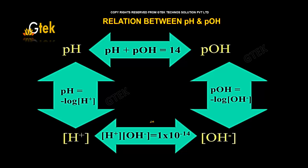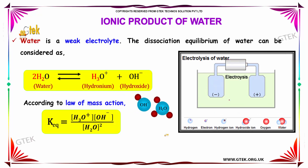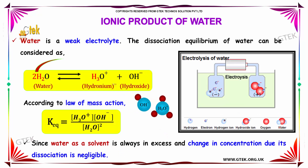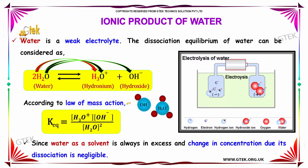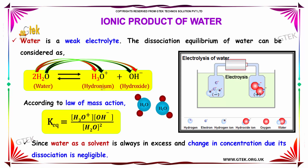The sum of pH and pOH will always be equal to 10 to the power minus 14. Water is a weak electrolyte. The dissociation equilibrium of water can be considered as 2 molecules of water producing hydronium ion and hydroxide ion. This reaction, as we have already seen, is always in equilibrium.